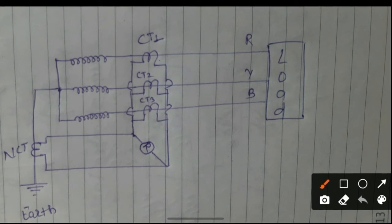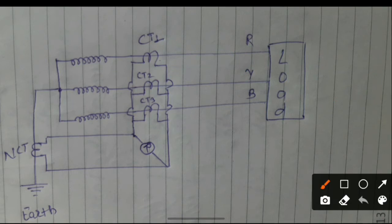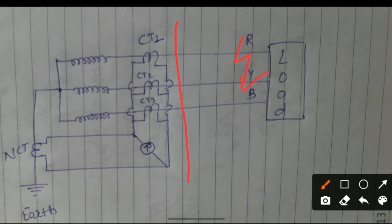In this image we can see the star winding of the transformer, which is the secondary winding. The load is connected. These are the R, Y, B phases. CT1, CT2, CT3 are shown, along with the overcurrent relay, the NCT, earth, and zero potential. We have two conditions: condition one — if the fault occurred outside the zone — and condition two — if the fault occurred inside the zone.